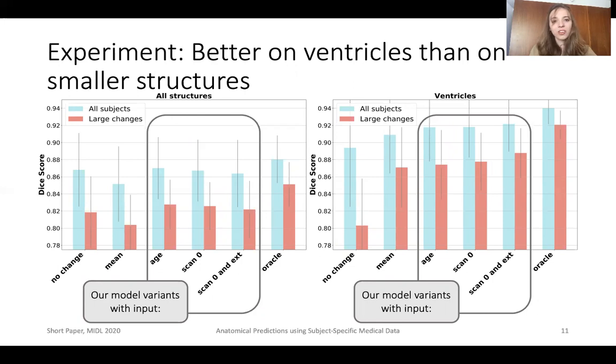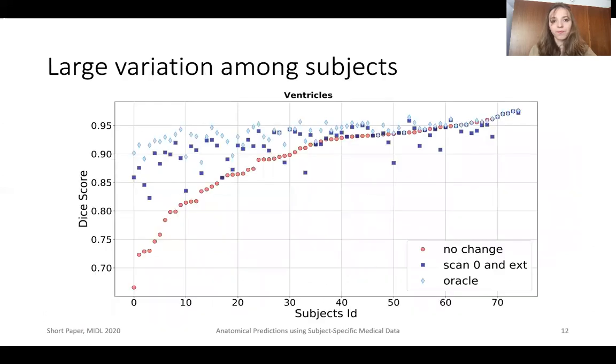In these charts, we noticed high variance in DICE scores. To understand why, we looked at subject-specific performances. In this graph, some subjects experience very large ventricular changes, while others don't.